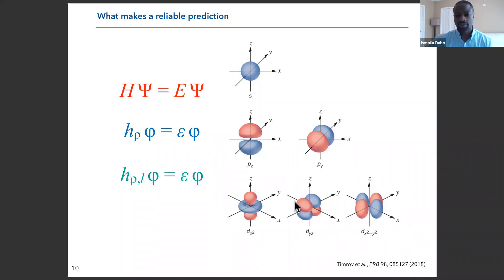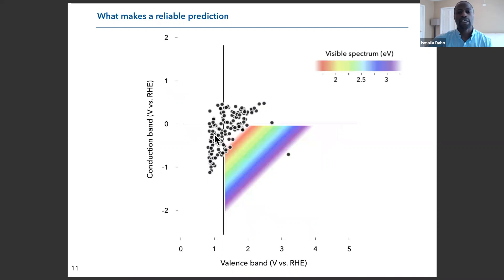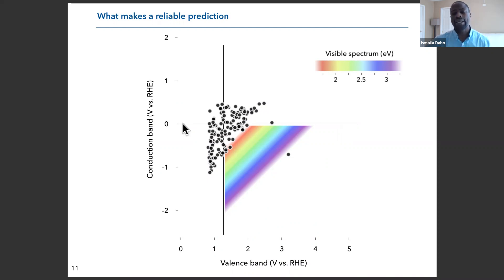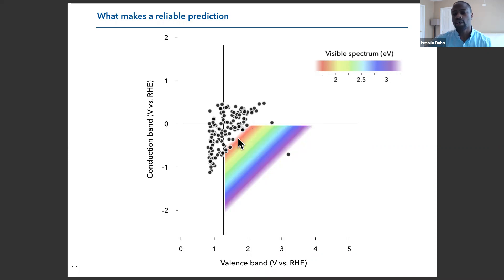Using this technique, we are able to calculate band gaps. I show here the result of the standard DFT method compared to DFT+U. The plot shows the conduction band as a function of the valence band position. For water splitting, you want the conduction band to be lower than 0 eV to catalyze the reduction of water, and the valence band to be higher than 1.23 eV, corresponding to the redox potential of water oxidation — placing you in the lower-right quadrant of this diagram, and within the visible solar spectrum region.